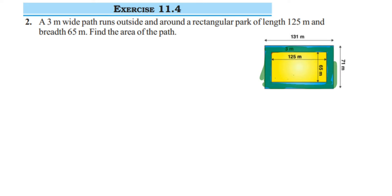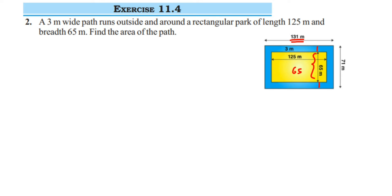So I have to first find the area of the whole rectangular park including the path, then subtract only the area of the rectangular park. But we don't know the length and breadth of the bigger rectangle. The path is 3 meter wide, so 3 plus 3 equals 6, and 125 plus 6 gives us 131 meter for the length. Similarly, 65 plus 6 equals 71 meter for the breadth.